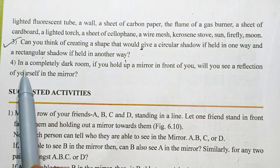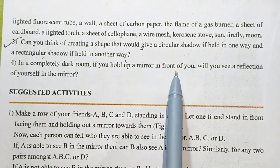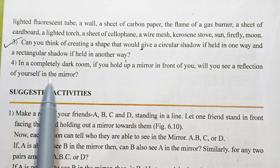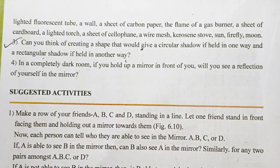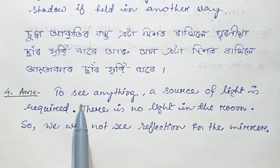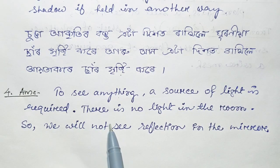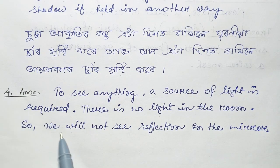Question number 4: In a completely dark room, if you hold up a mirror in front of you, will you see a reflection of yourself in the mirror? To see anything, a source of light is required. There is no light in the room, so we will not see a reflection in the mirror.